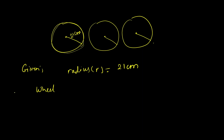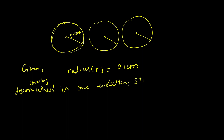The distance covered by the wheel in one revolution is equal to the circumference. One round equals the circumference: 2πr, where r is 21 cm. So 2πr equals 42π cm. This is for 1 revolution.